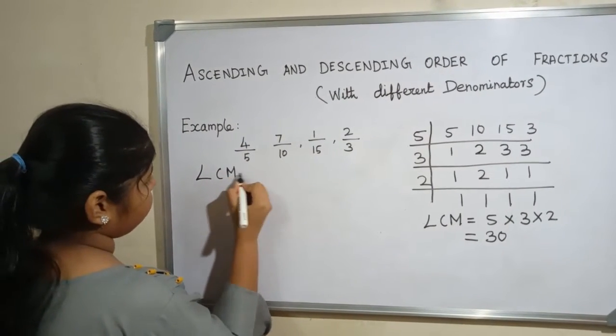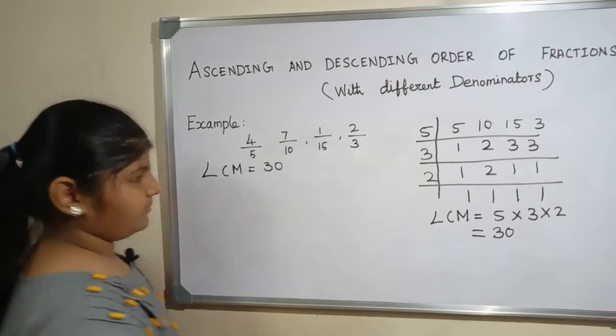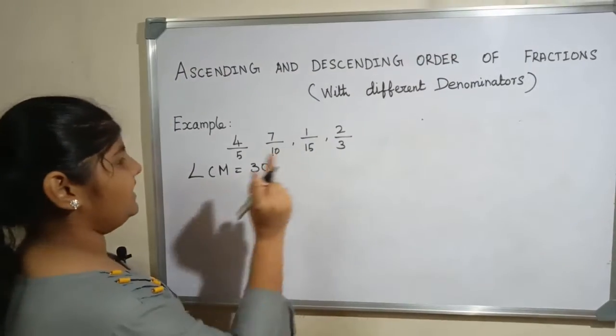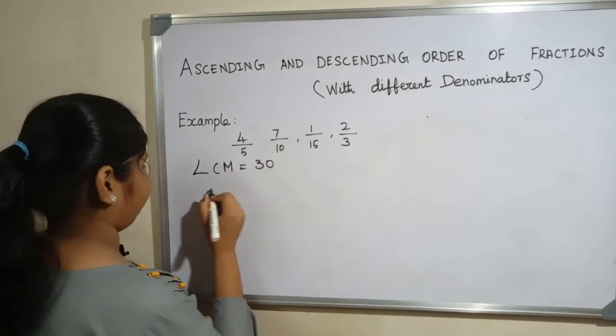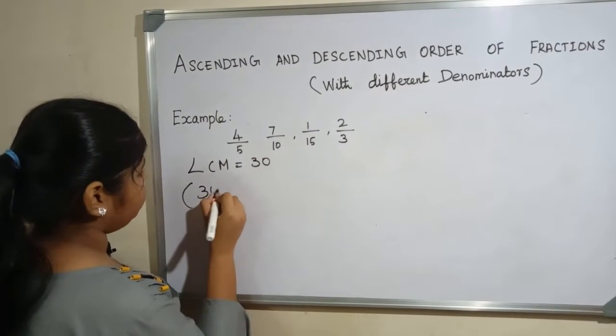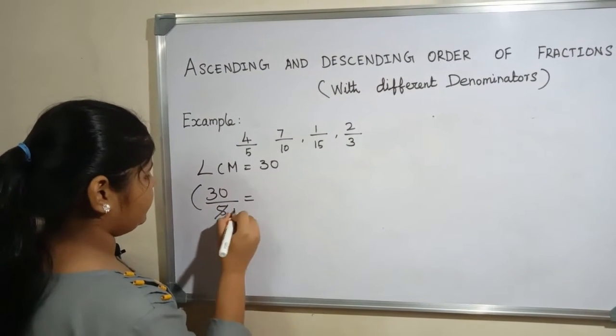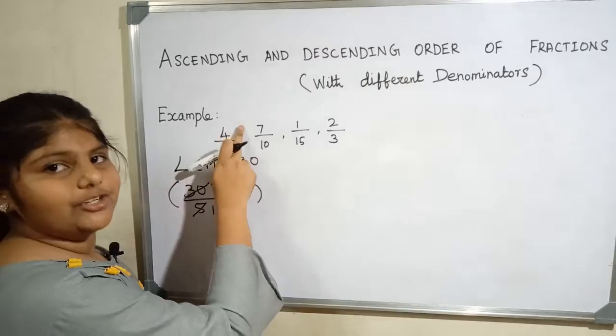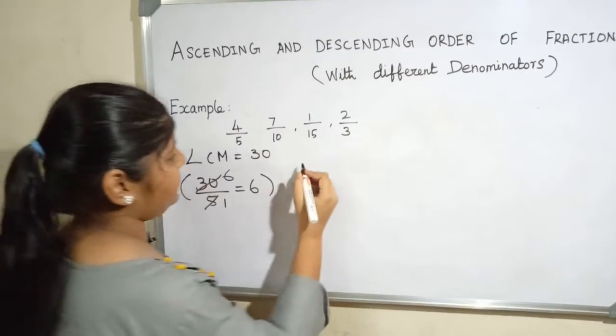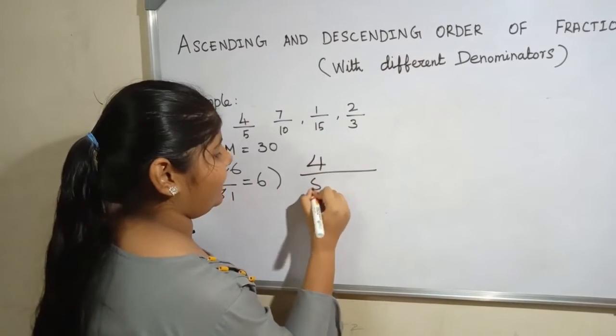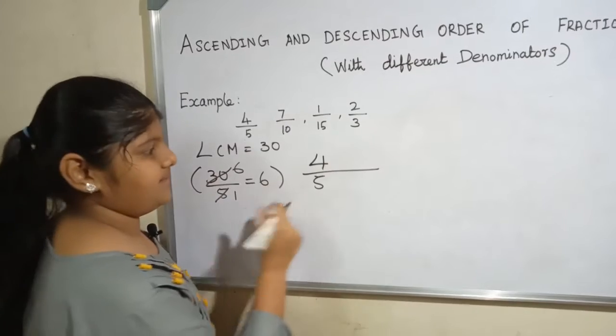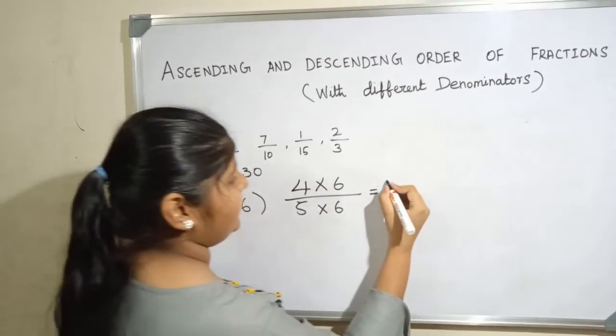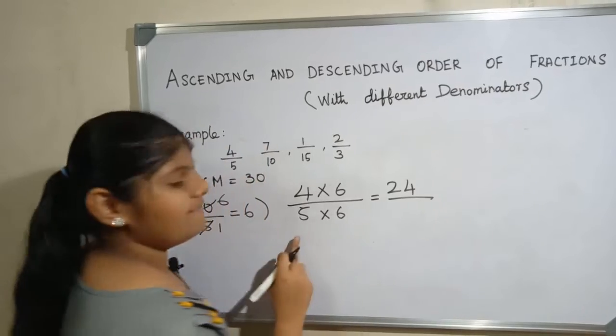The LCM is 30. Now we will divide the LCM by the denominator of fraction. 30 divided by 5. 5 1s are 5, 5 6s are 30. Next, we have to multiply both numerator and denominator with 6. 6, 4 by 5 multiplied with 6. 4 6s are 24 by 5 6s are 30.